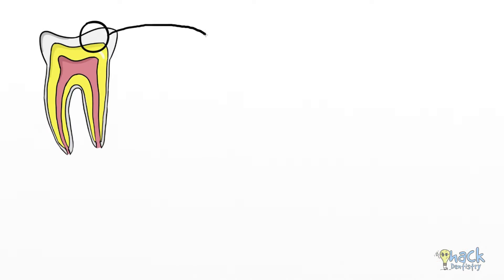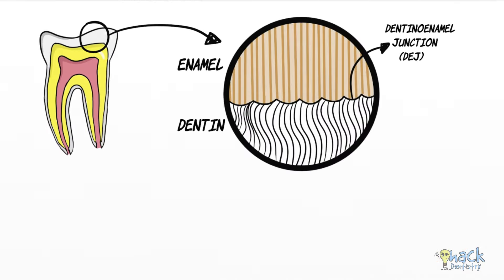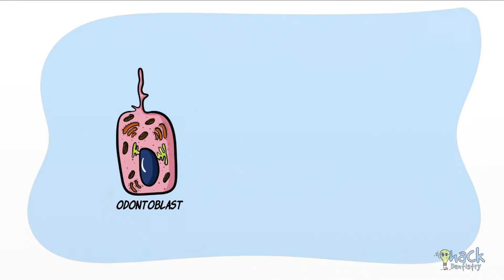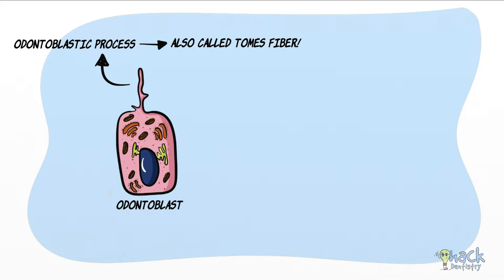Dentine has numerous dentinal tubules that run across its length. Each dentinal tubule houses the cytoplasmic process of an odontoblast. It should be noted that an odontoblastic process is also called Tomes' fiber.